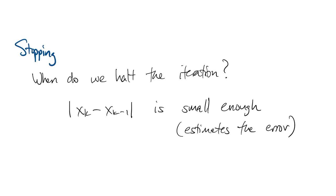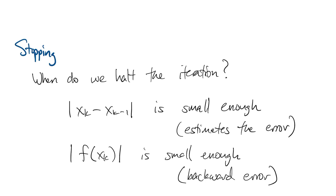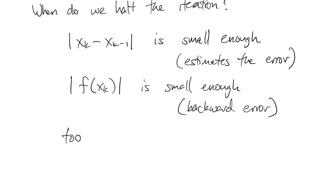That would be ideal, but of course sometimes we can't make the forward error small if the problem is ill-conditioned, so we also have to check the residual, which is the backward error. Finally, it might not be converging at all, so we have to stop if we're taking what we consider to be too many iterations. So if any one of these criteria are met, we'll stop.